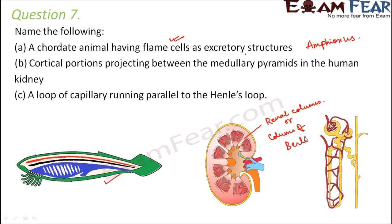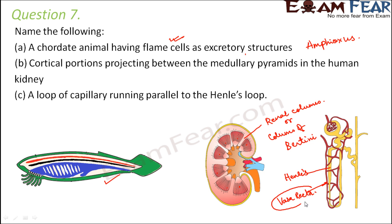Third — a loop of capillary running parallel to Henle's loop. Henle's loop is this U-shaped loop. Running parallel to it is nothing but the vasa recta, so vasa recta is the answer.